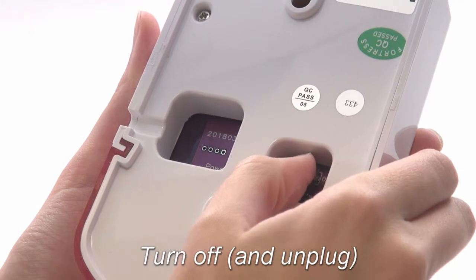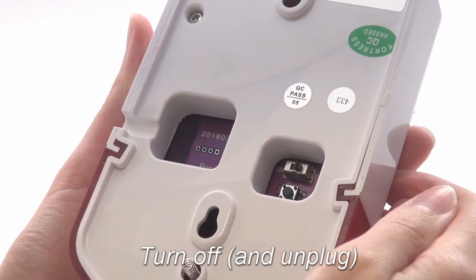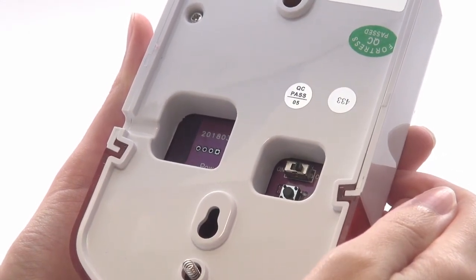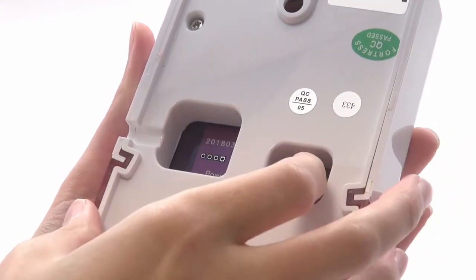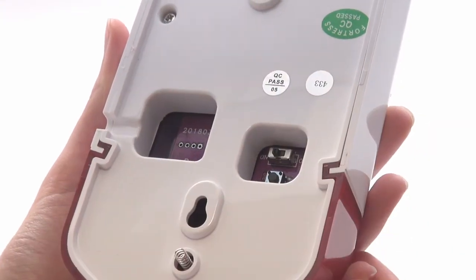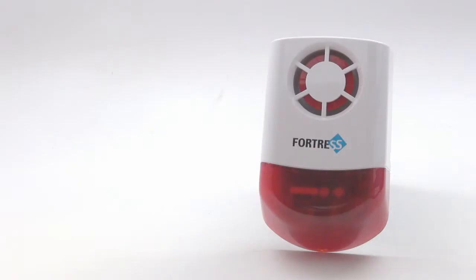To finish, turn off the siren and unplug it if it was plugged in for about 5 seconds. Then turn it back on, and you're done. Your siren has now been completely deprogrammed.